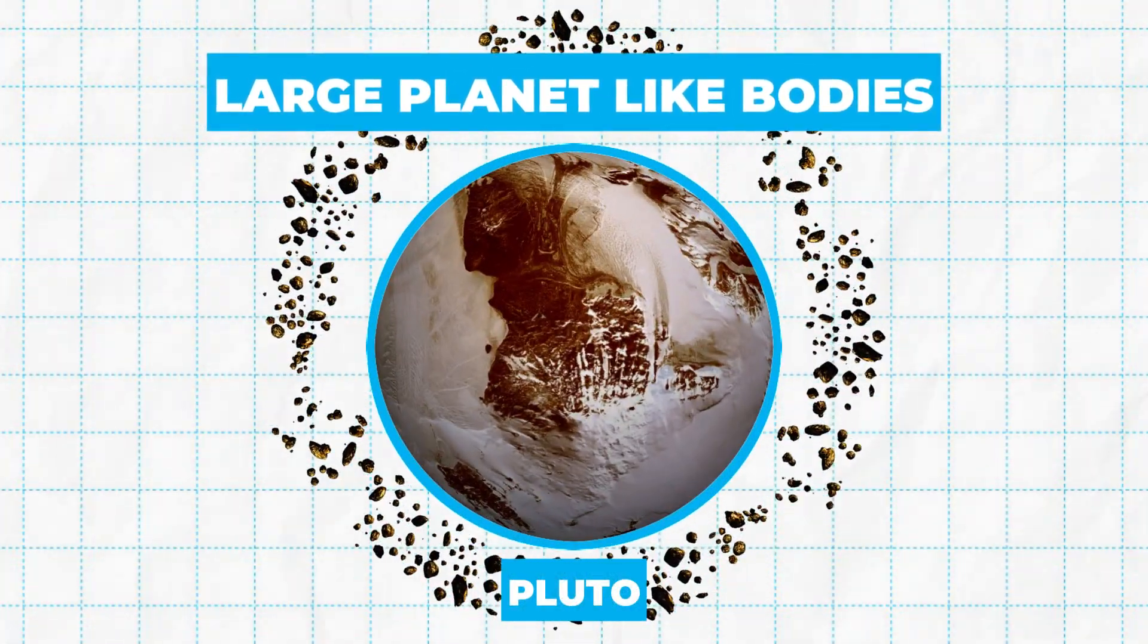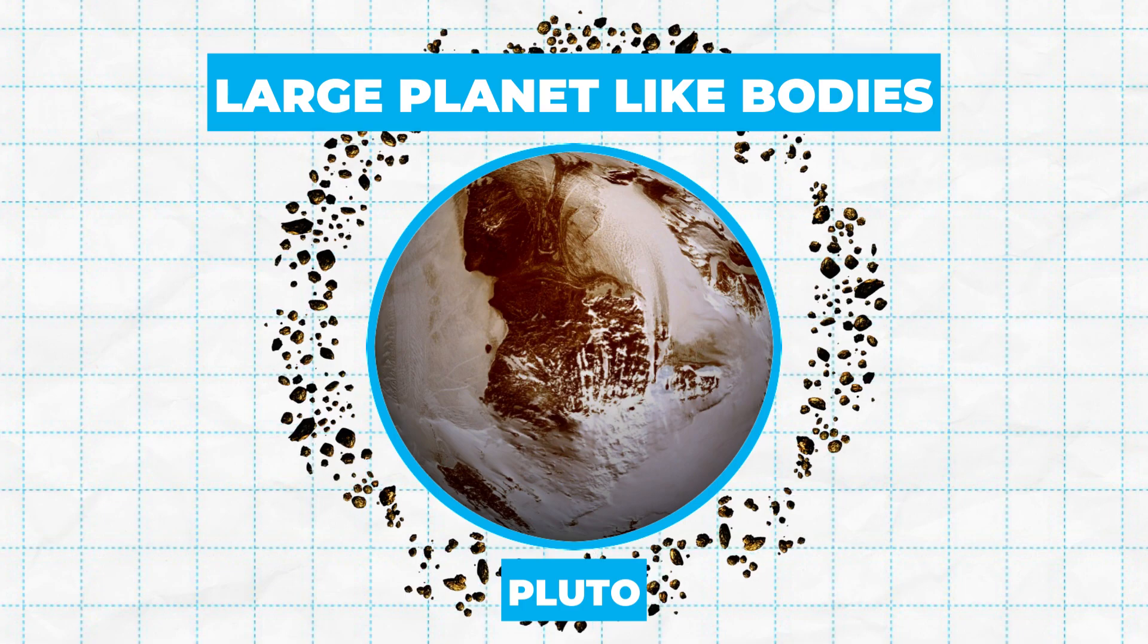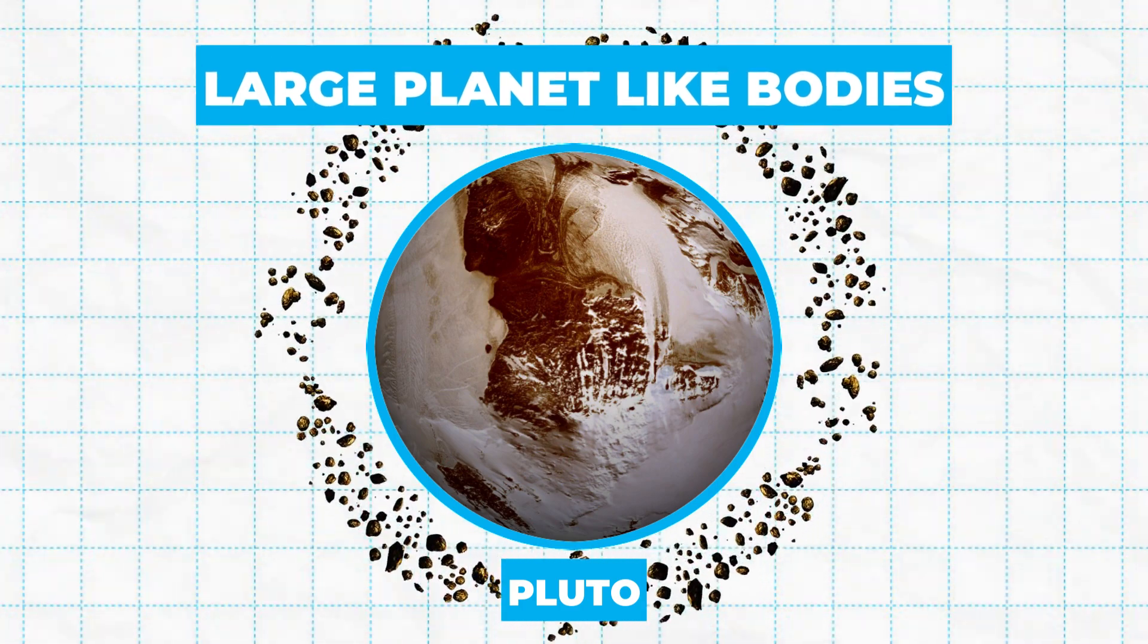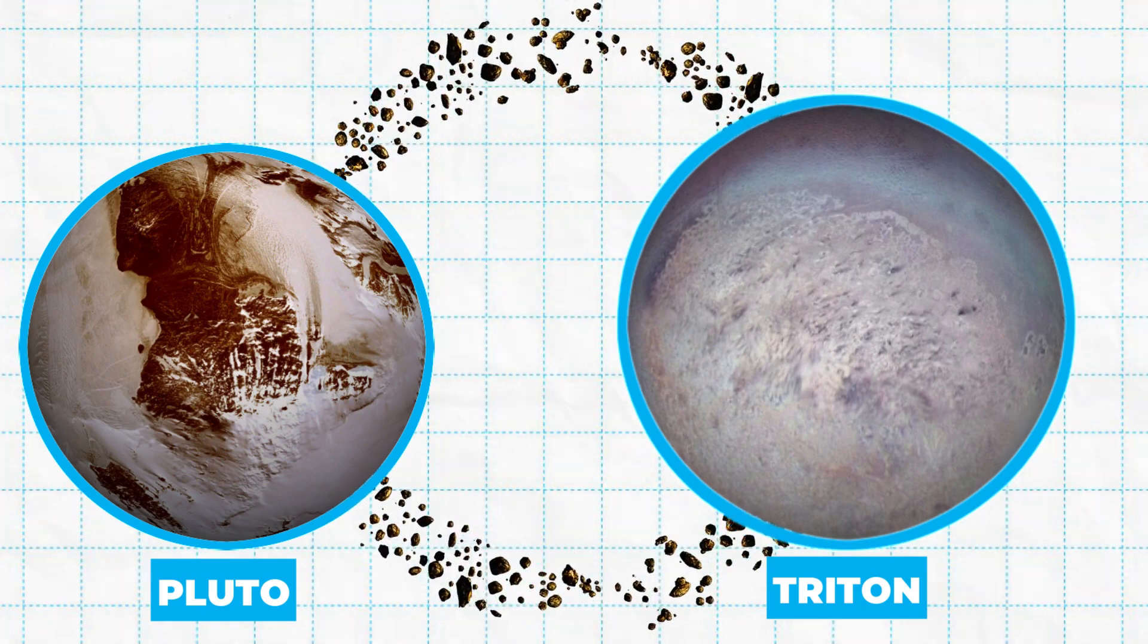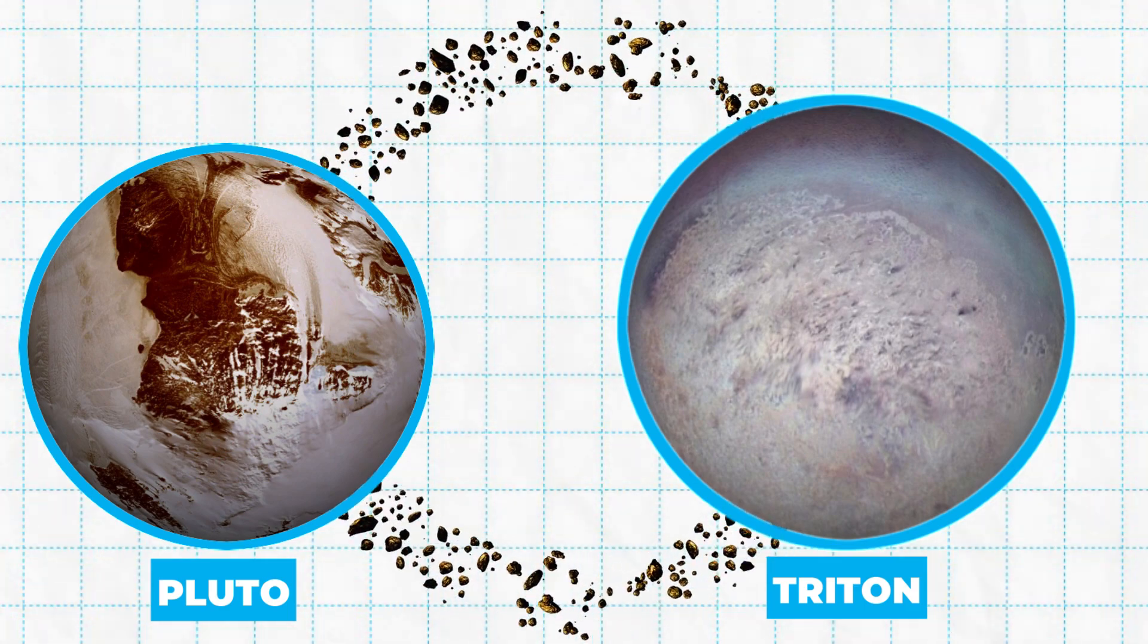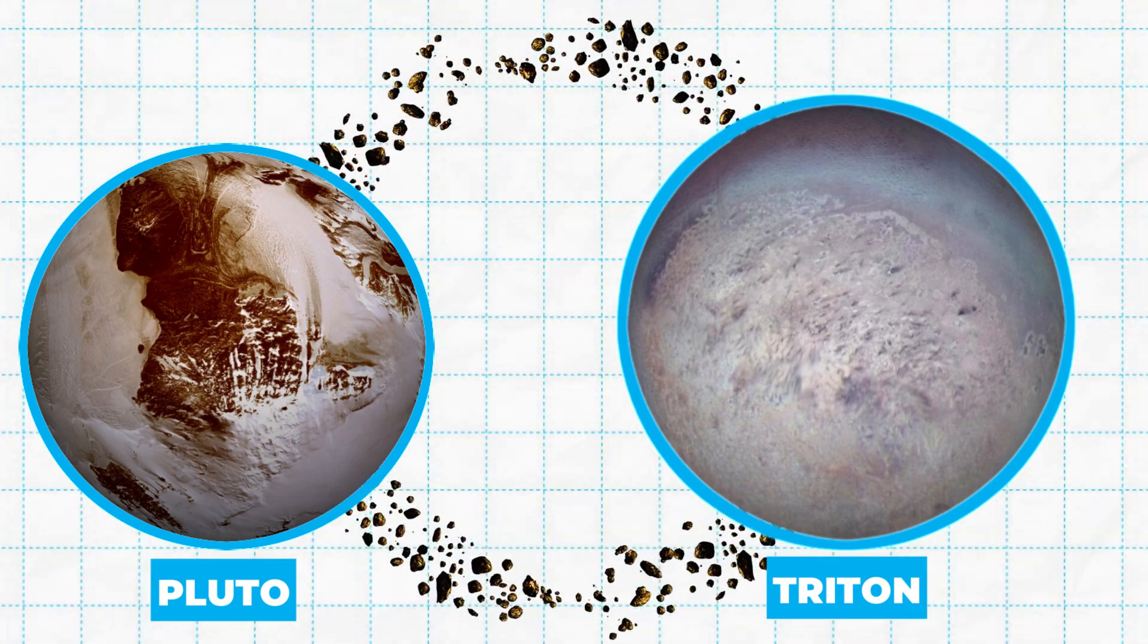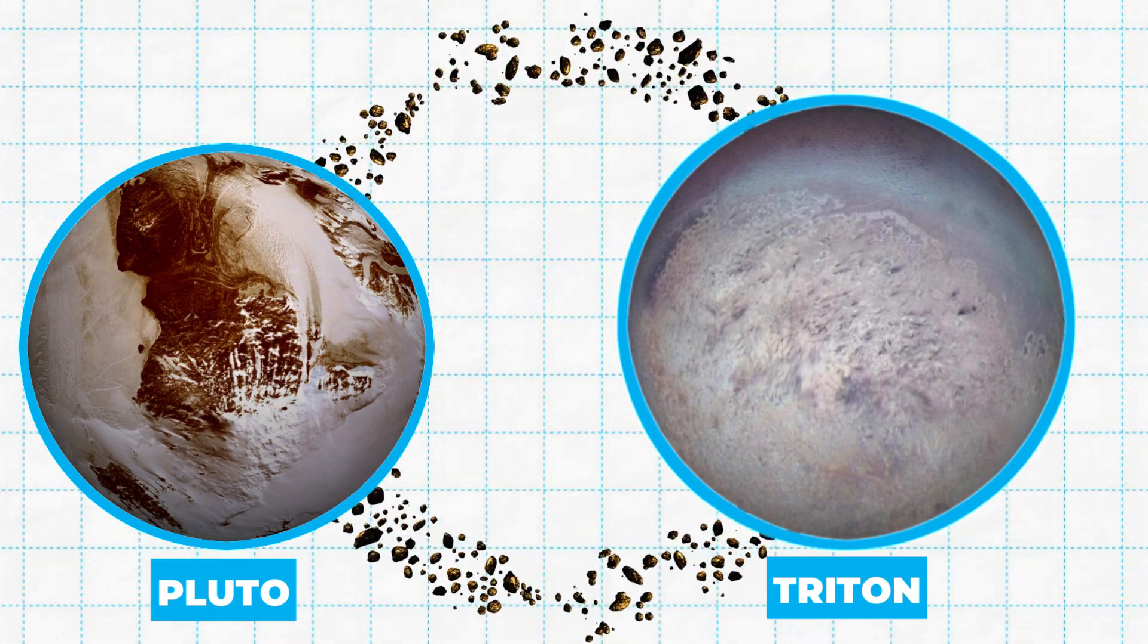Pluto is now recognized as the largest in a population of known Kuiper Belt objects. Triton is only slightly larger than Pluto and is nearly identical in composition, which has led to the hypothesis that the two share a common origin.